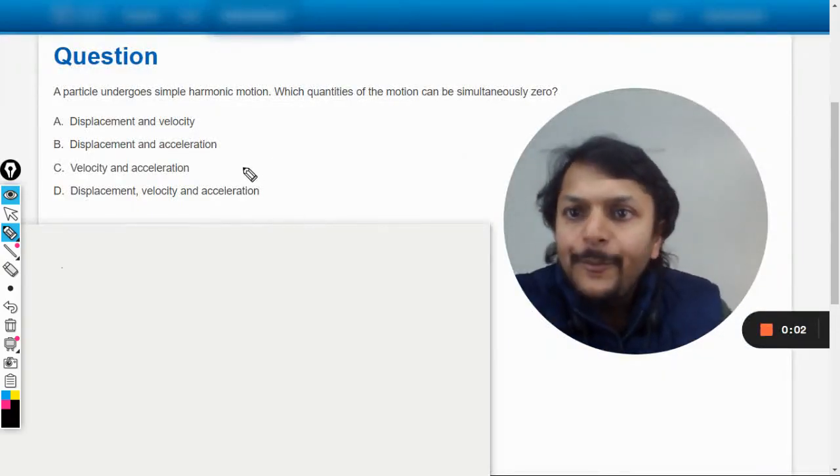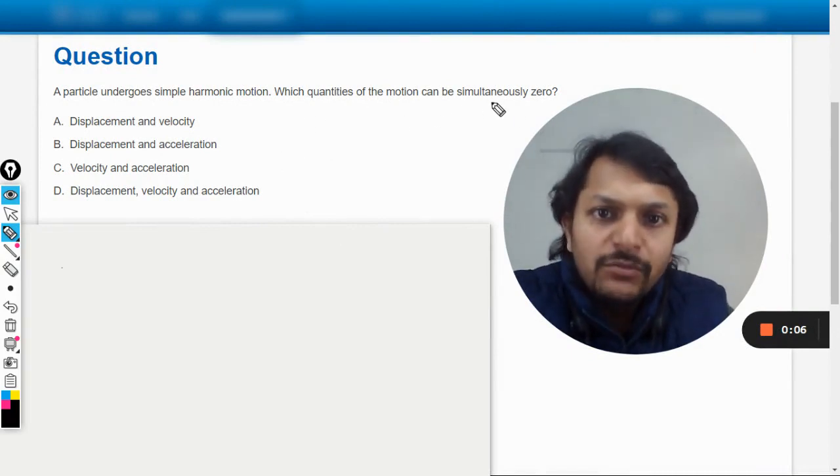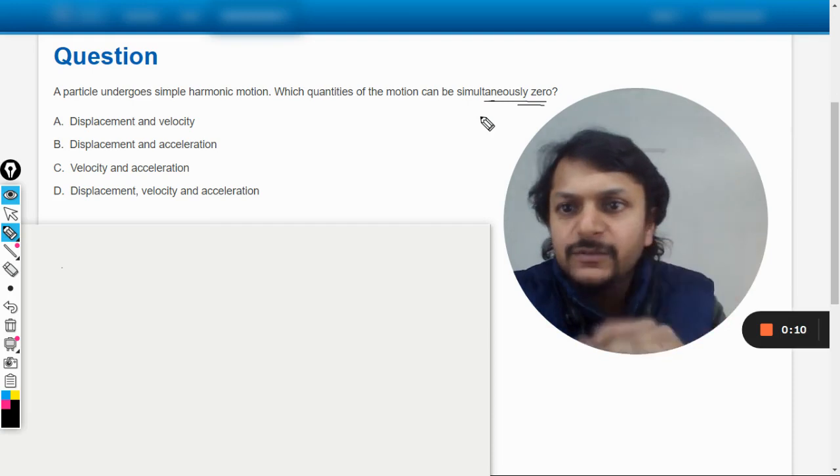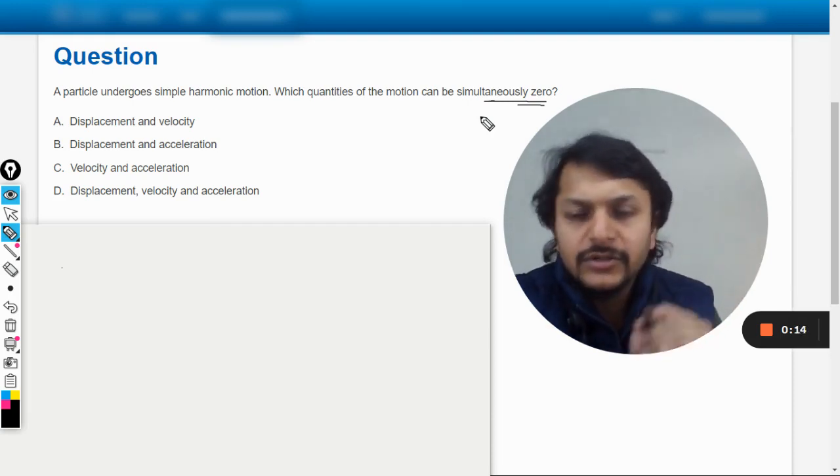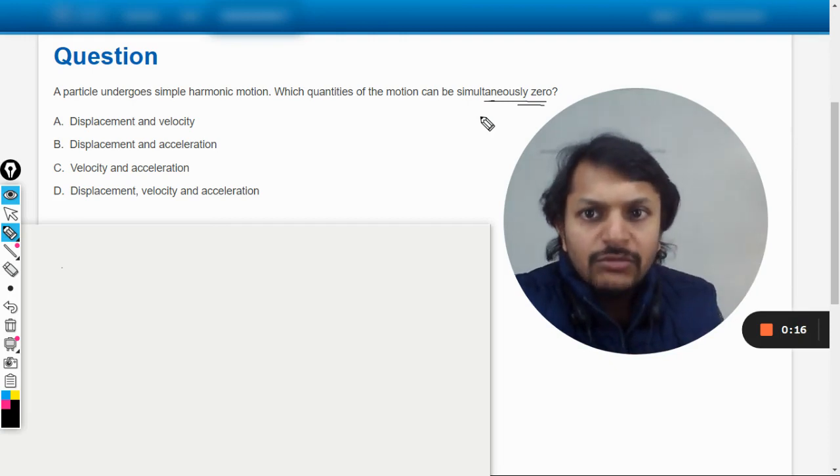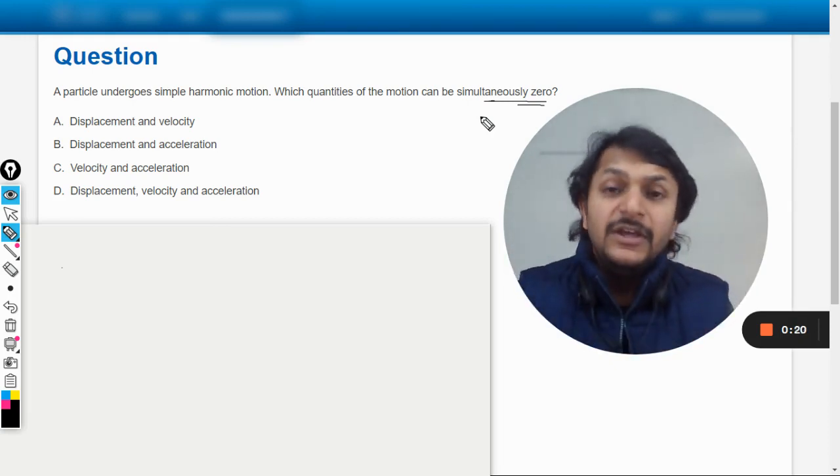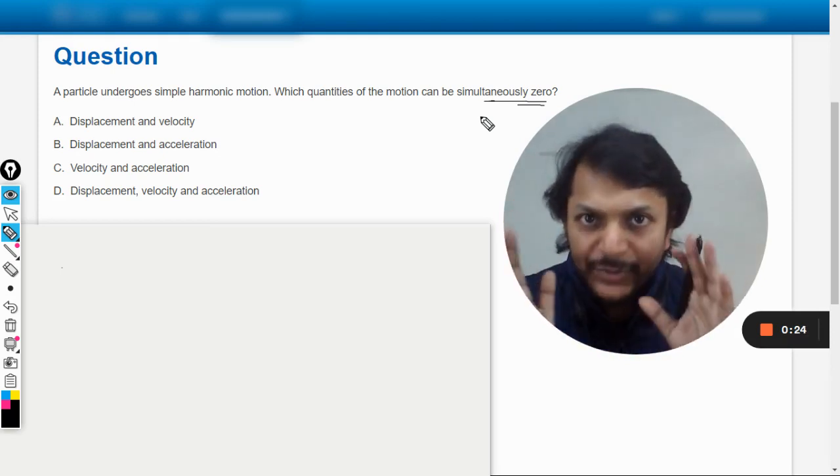Okay dear students, let us see: a particle undergoes simple harmonic motion. Which quantities of the motion can be simultaneously zero? Displacement and velocity, displacement and acceleration, velocity and acceleration, or option D. I have seen these kinds of questions repeatedly coming in IB, so this becomes really very important for you to understand this thing 100 percent.